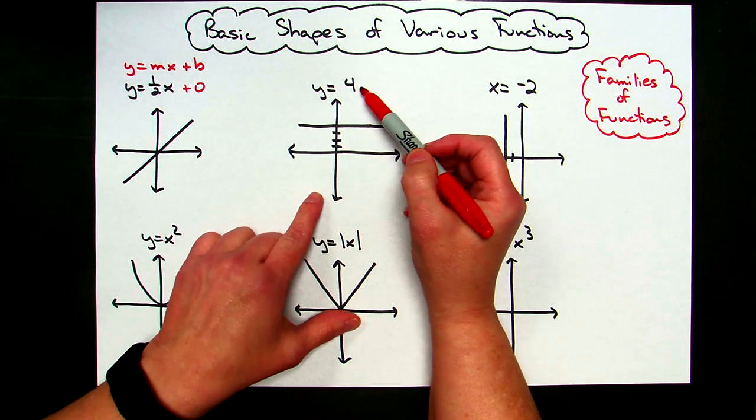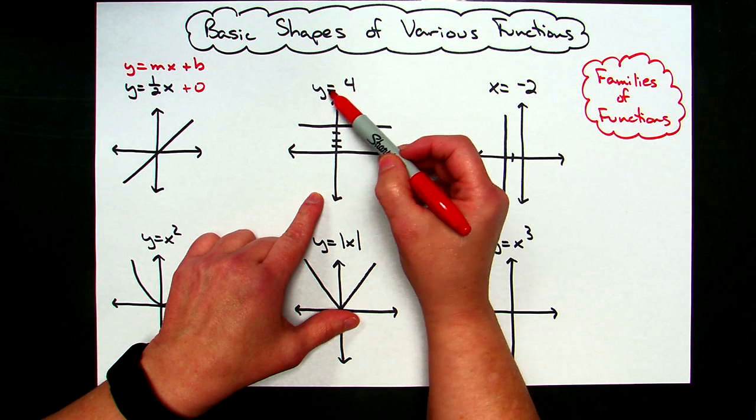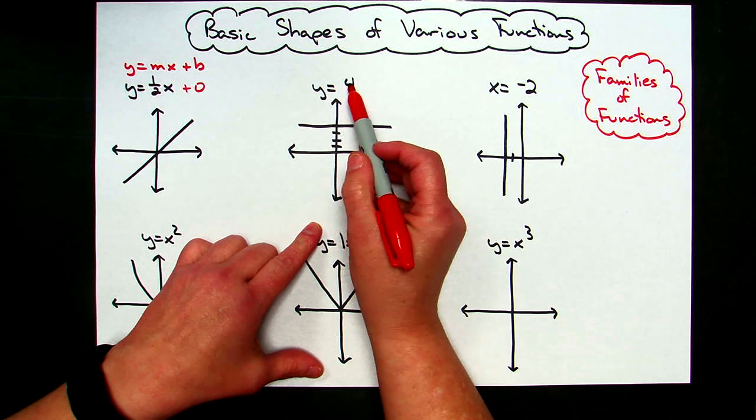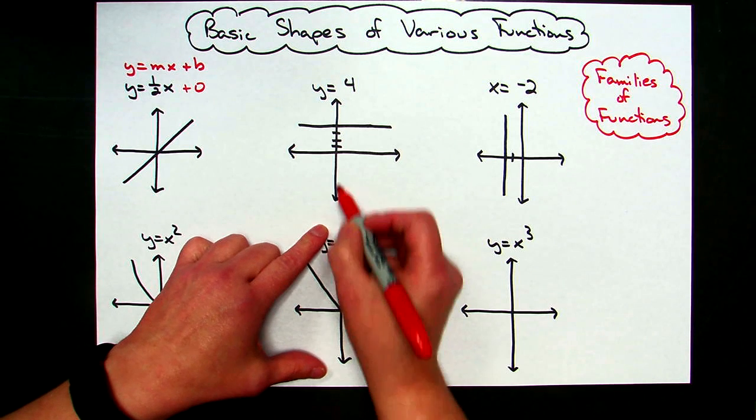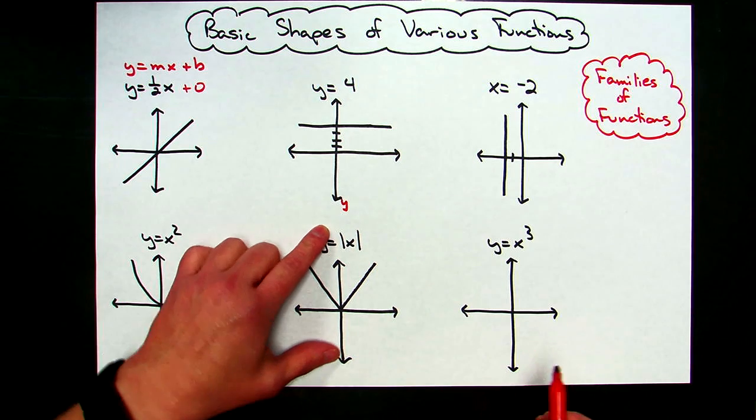Equations that have y equals some number, every one of those will be a horizontal line. So all you have to do to sketch it is to go to the y-axis, go up to the number one, two, three, four there, and then draw a horizontal line through it.